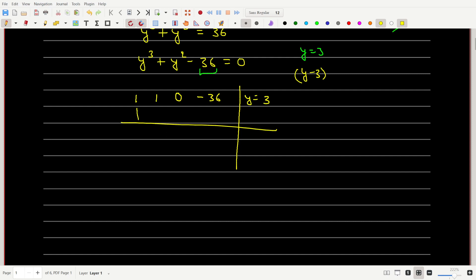So we can bring down this 1, and then 3 times 1 is 3, 3 plus 1 is 4, 4 times 3 is 12, 12 plus 0 is 12, 12 times 3 is 36, negative 36 plus positive 36 gives 0.